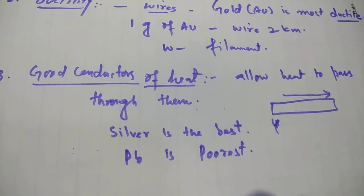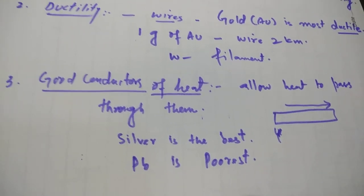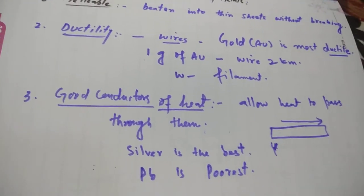So these are the first three properties of the metals.